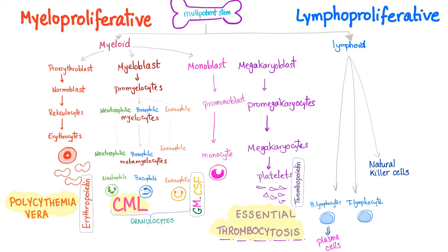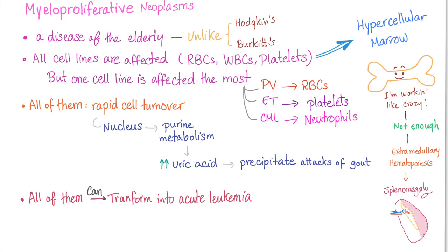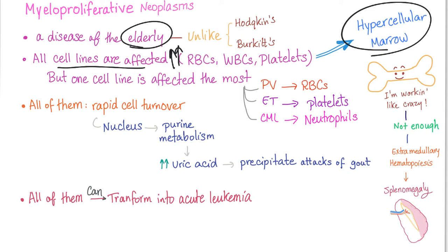Here is hematopoiesis — myeloproliferative disorders are here, lymphoproliferative disorders are here, and essential thrombocytosis is here — it's when you have lots of platelets. Here is a list of the myeloproliferative and lymphoproliferative disorders. We have talked about CML and polycythemia vera before, and today's topic is essential thrombocytosis. Myeloproliferative neoplasms are diseases of the elderly with hypercellular bone marrow. All cell lines are increased, but one dominates — in this case, it's the platelets.